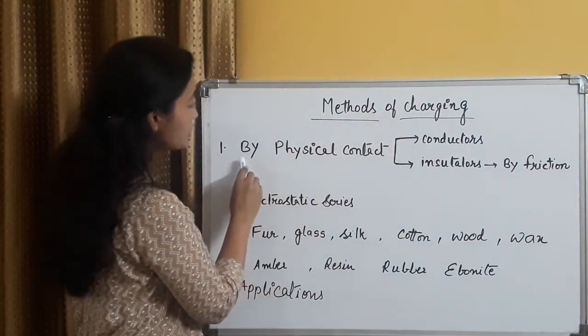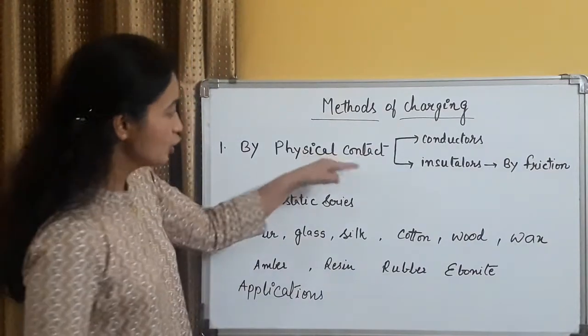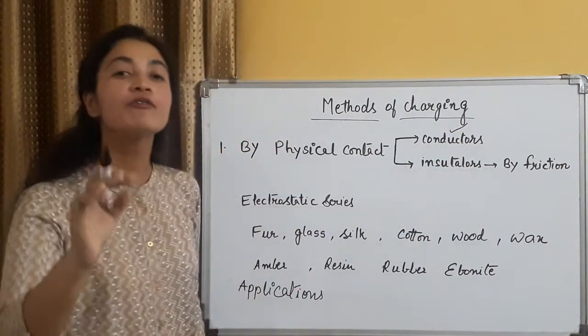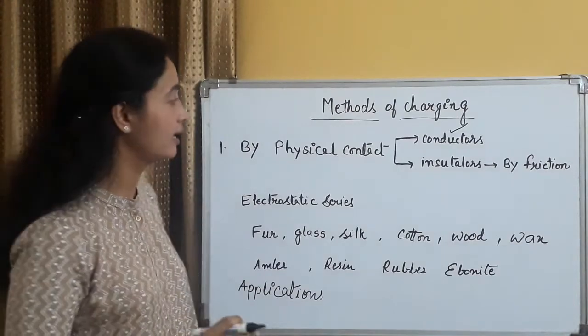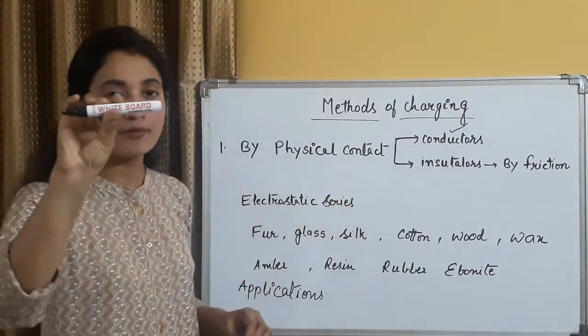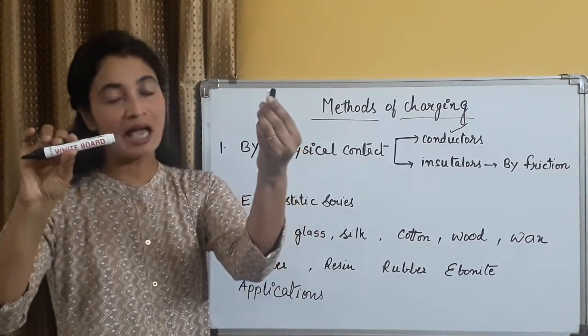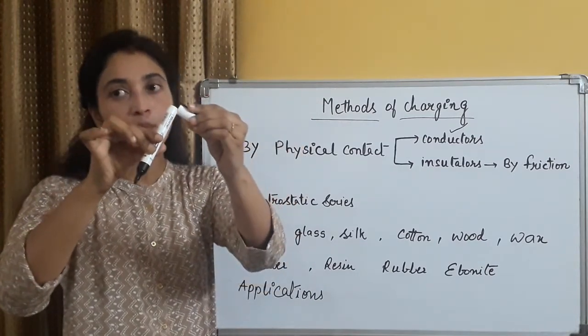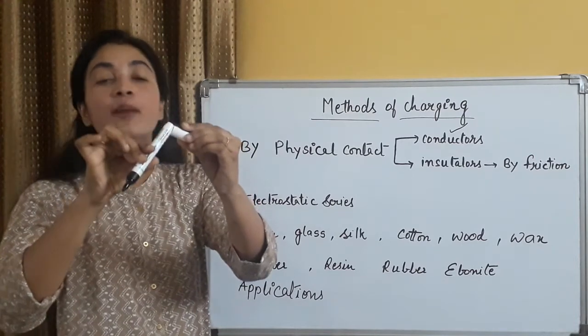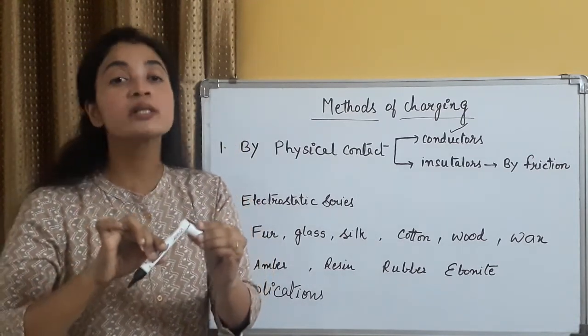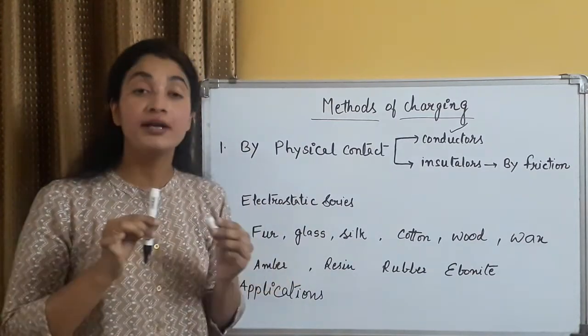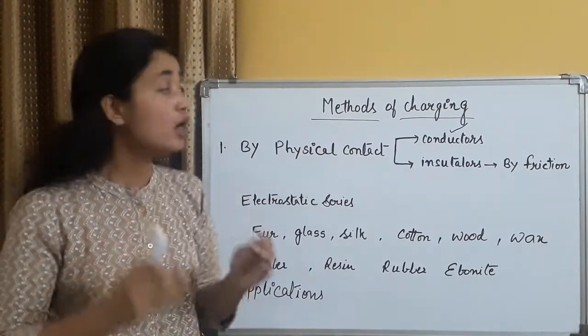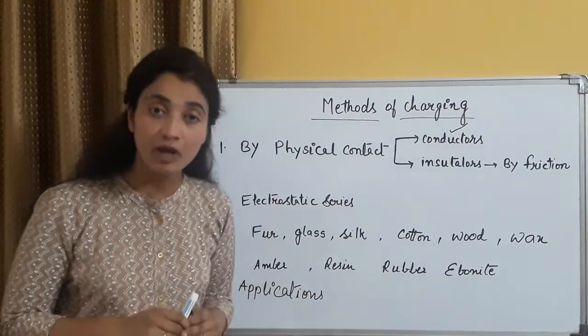Presently, we are focusing on method of charging. First method, by physical contact. Two categories of substances we are using for charging. First one is conductors. How can we charge conductors? Hum conductors ko kaise charge kar sakte hai? Just by bringing, suppose I have this as a charged conductor, and the small cap as an uncharged rod. Dono conductors hai, ek charged hai, ek uncharged hai. When we bring them both in contact to each other, at the point of contact, there is transfer of some loosely bound electrons.